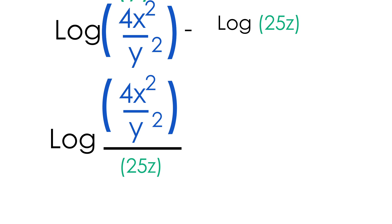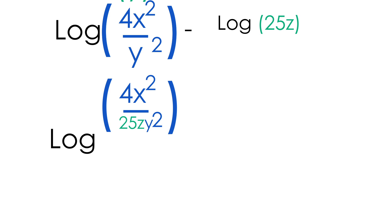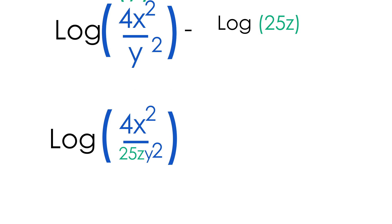We're almost finished, but notice that inside the log we have a fraction within a fraction, which we need to fix. We have 4x²/y² divided by 25z, so we take the 25z and put it in the denominator next to the y². This simplifies to log(4x² / (25z·y²)), and we have successfully condensed these logarithms into one single log. This is our final answer.